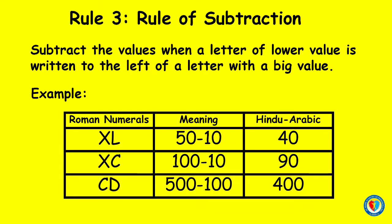Rule number three: rule of subtraction. Subtract the values when a letter of lower value is written to the left of a letter with a bigger value. For example, XL — X has a value of 10 and L has a value of 50. So XL will be 50 minus 10, which is equal to 40.